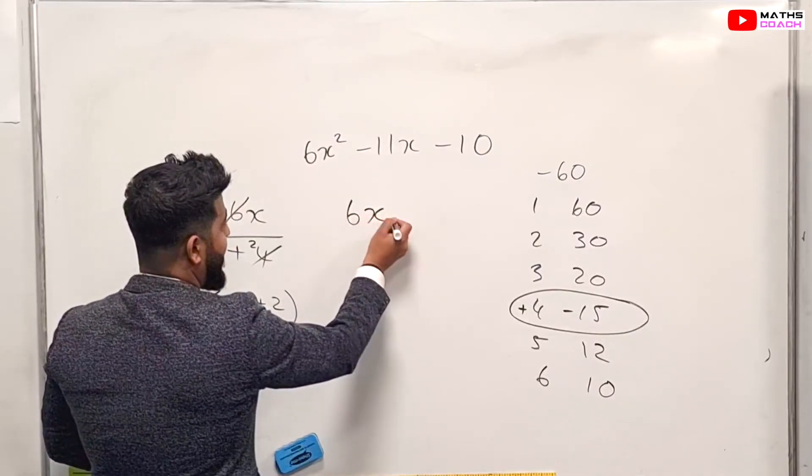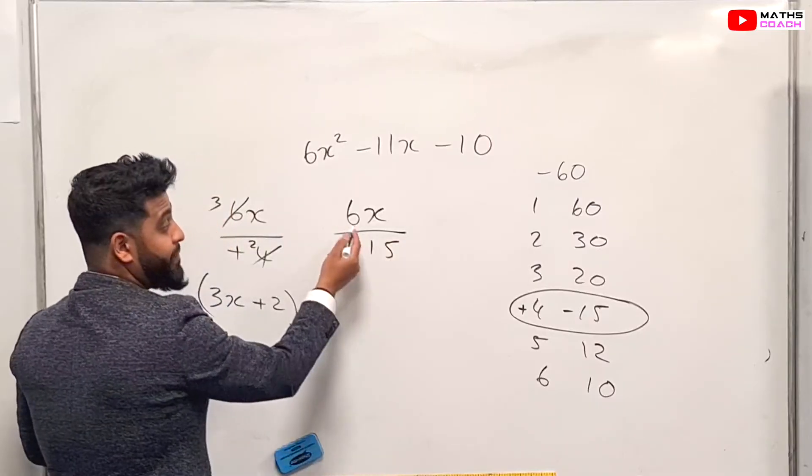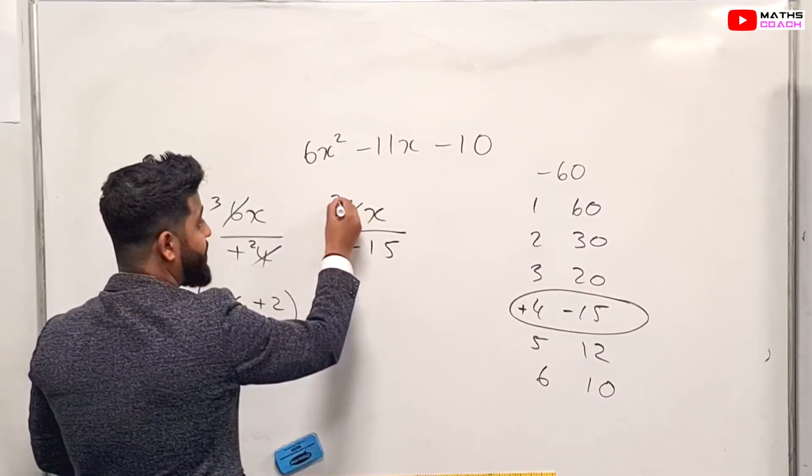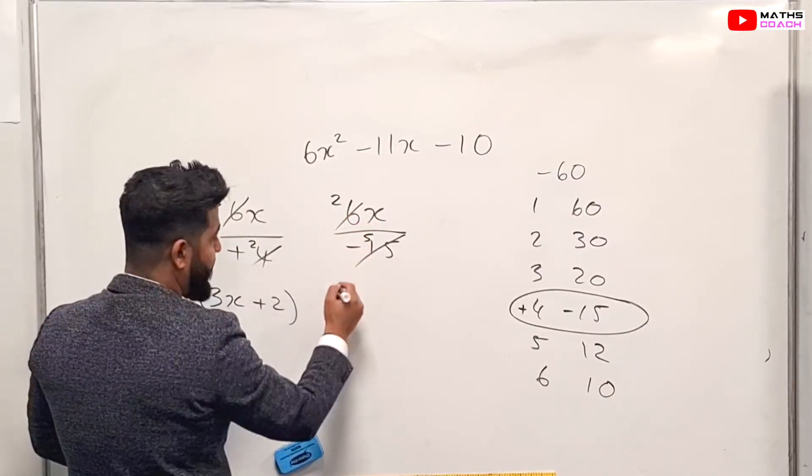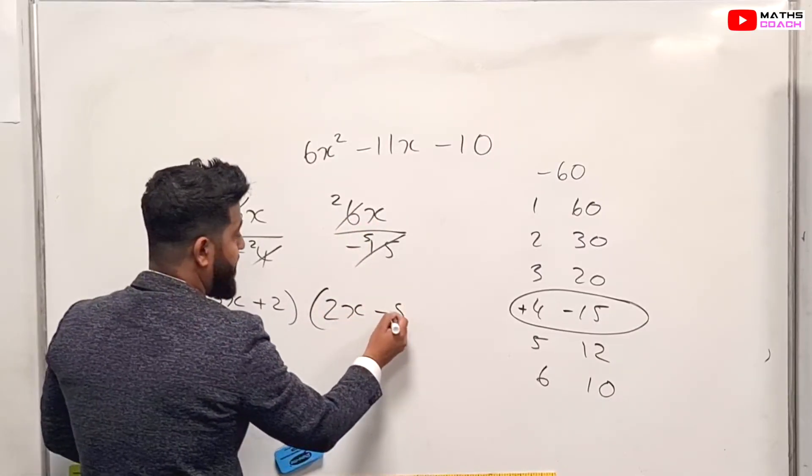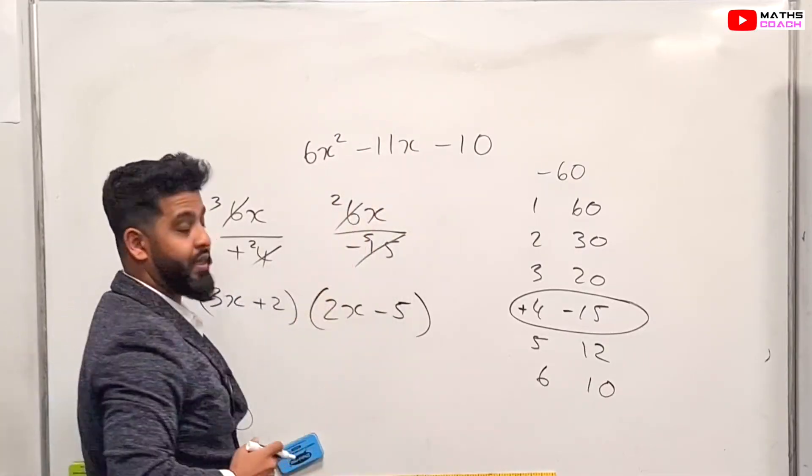So once again, 6x without the square, once again, over minus 15. So you can divide both of them by 3. So divide by 3 gives you 2. Divide by 3 gives you 5. So what do you have? 2x minus 5. So the second bracket is 2x minus 5. And here you have this factorized from this expression.